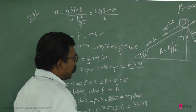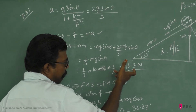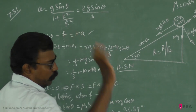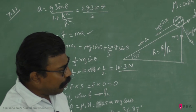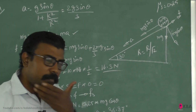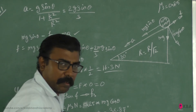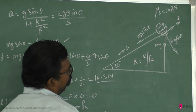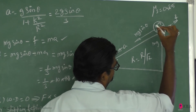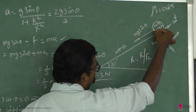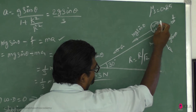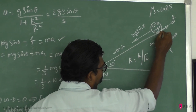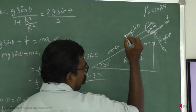Now, the second part: what is the work done against friction during perfect rolling? In perfect rolling, we consider the point of contact. Friction is present, but when the cylinder rolls, the point of contact always has an instantaneous velocity directed upward — always going up.